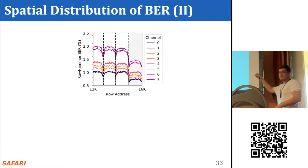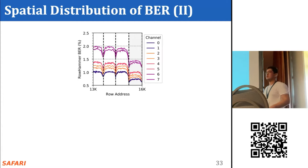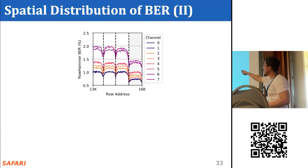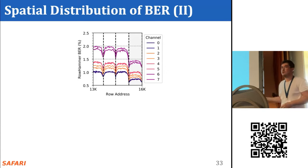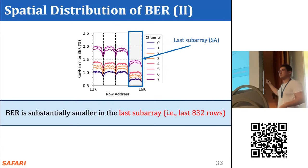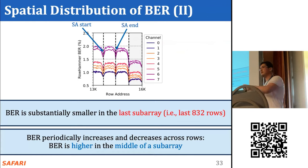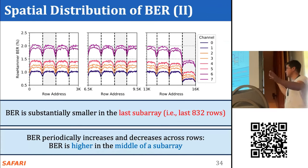This plot shows the bit error rate on the y-axis versus row address on the x-axis; different lines show bit error rates for different channels, showing only the last 3,000 rows. Dashed vertical lines represent sub-array boundaries. The bit error rate is substantially smaller in the last sub-array — that is, the last 830 rows. We also observe that the bit error rate follows a wavy pattern as row address increases, being highest in the middle of a sub-array and lowest at either end.